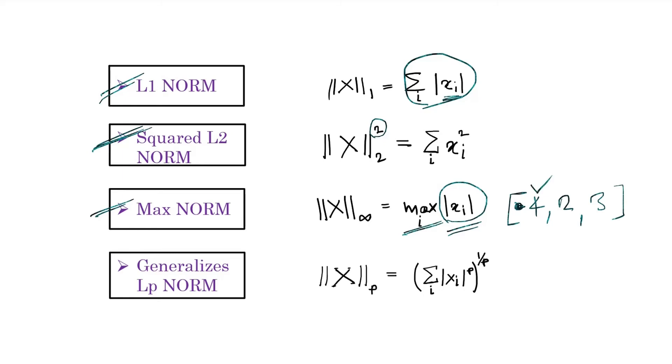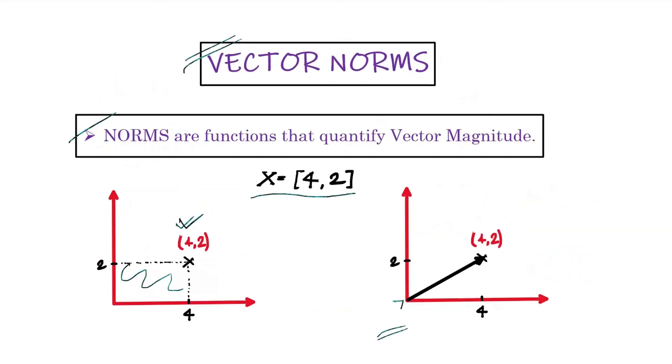Lastly, we have a generalized formula for any kind of norm, which is also represented as Lp norm. You can put a value of p in this formula, and the value has to be a real number like 1 or 2. If you consider the value of p as 1, it will give you the formula for L1 norm. If you put the value of p as 2, it will give you the formula for L2 norm.